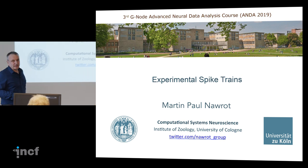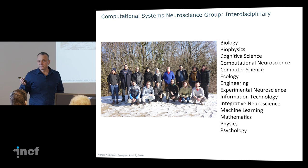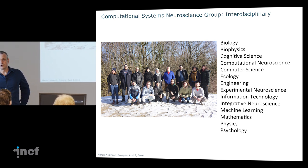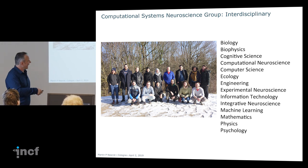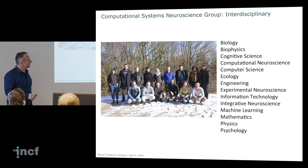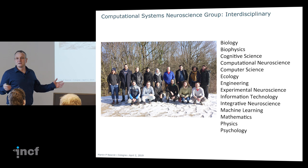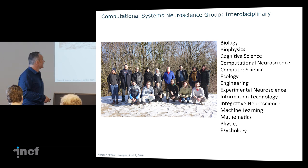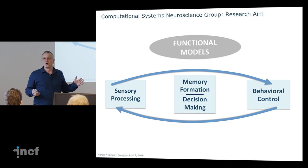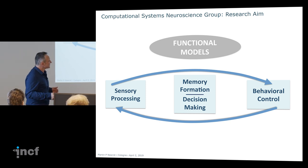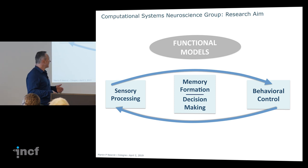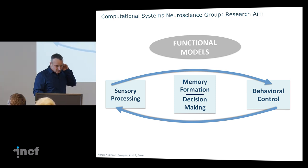My group is a Computational Science Group with people from different fields — biology and theoreticians. Our aim is to come up with good models; I'll show examples today of data-driven modeling. We try to understand how sensory processing and behavioral control interact, which means we need functional models. We also look at memory formation and a little decision making.